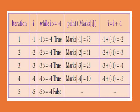In the next iteration, the index value is minus 2. Minus 2 is greater than or equal to minus 4, so condition is true and the result is 41. Then i increases to minus 3, condition is true and result is 23. Then i becomes minus 4, condition is true and marks of minus 4 is 10. Then i becomes minus 5, which is less than minus 4, so the condition is false and the loop stops. This completes accessing elements in reverse order.